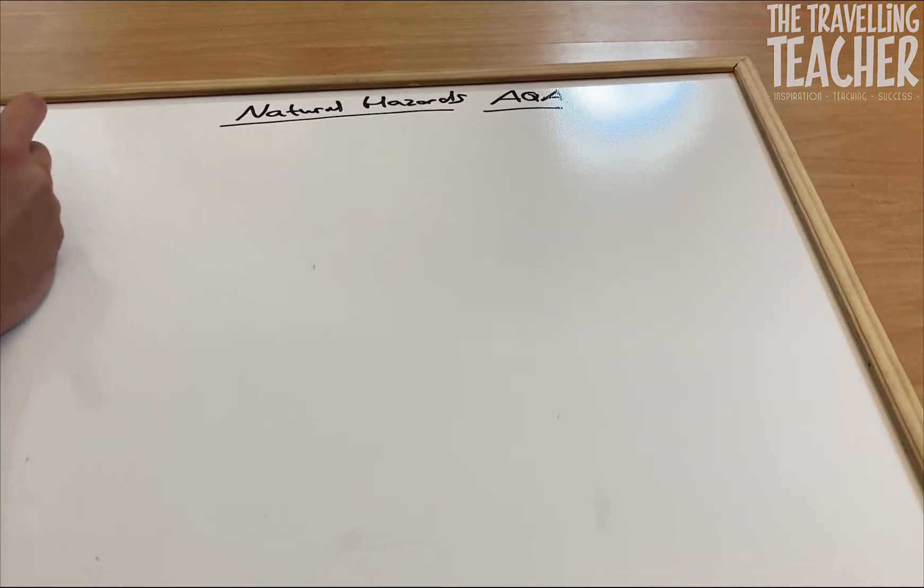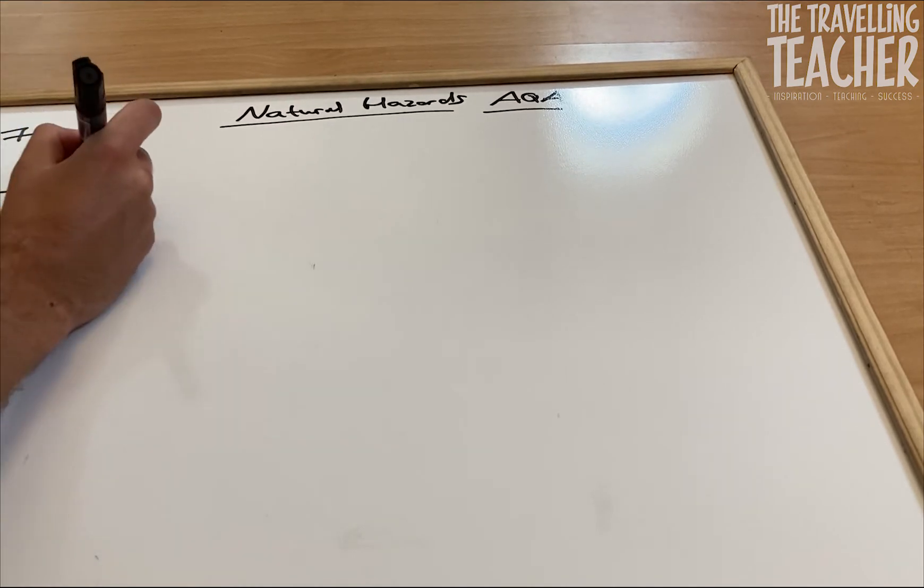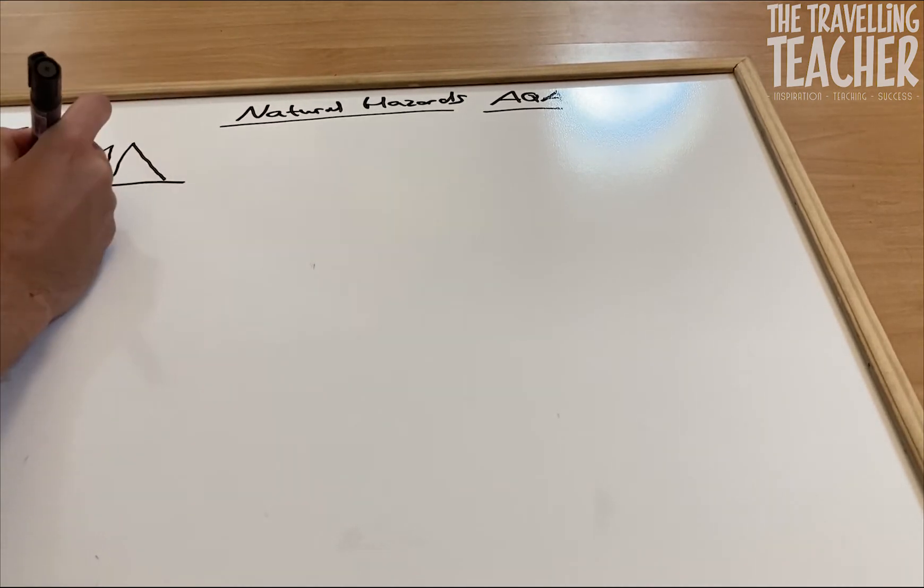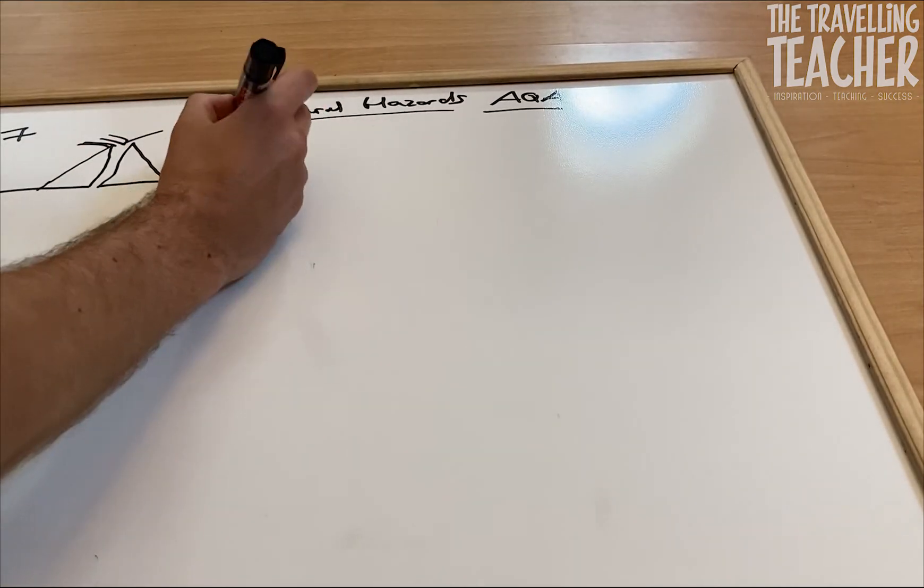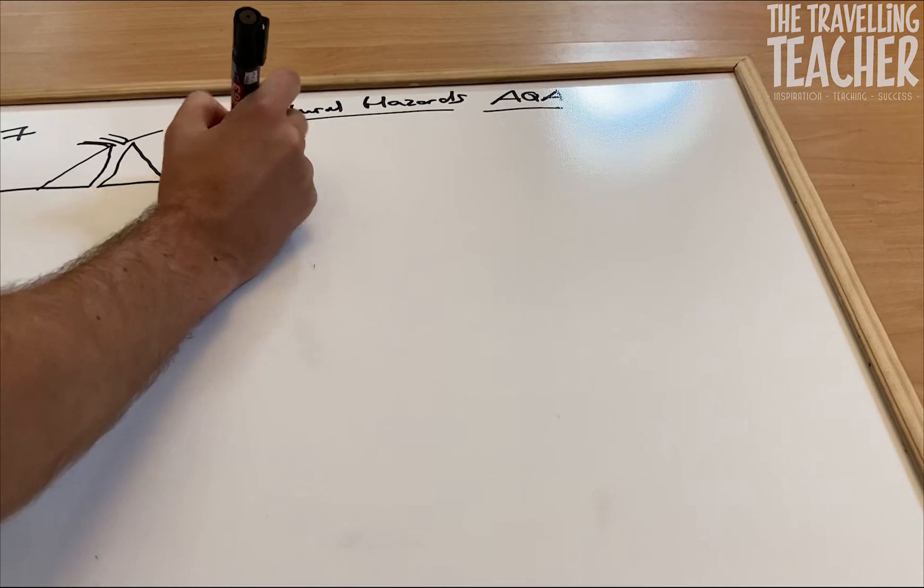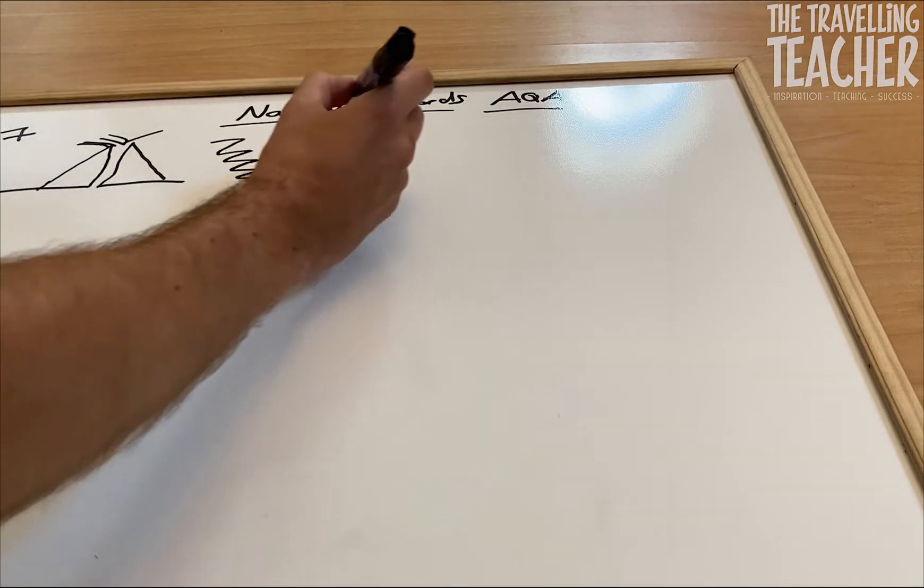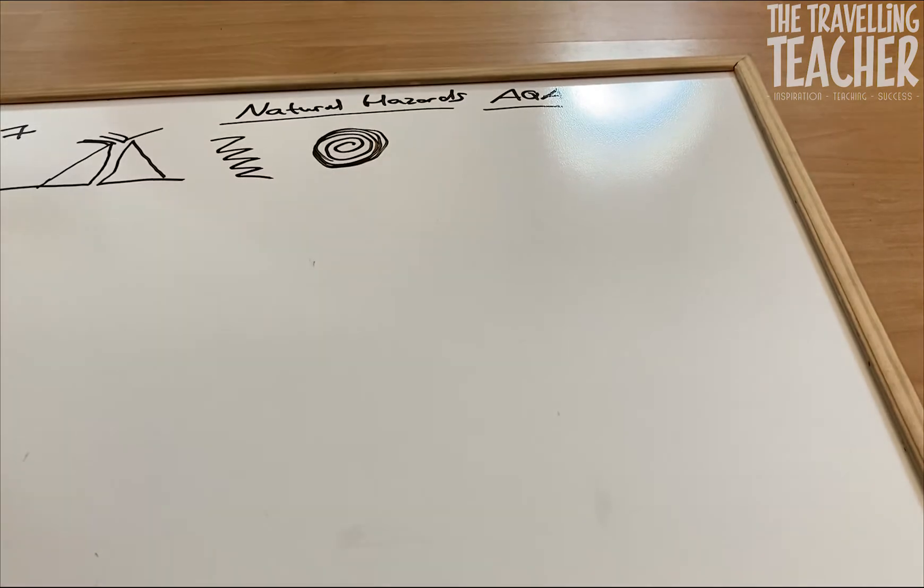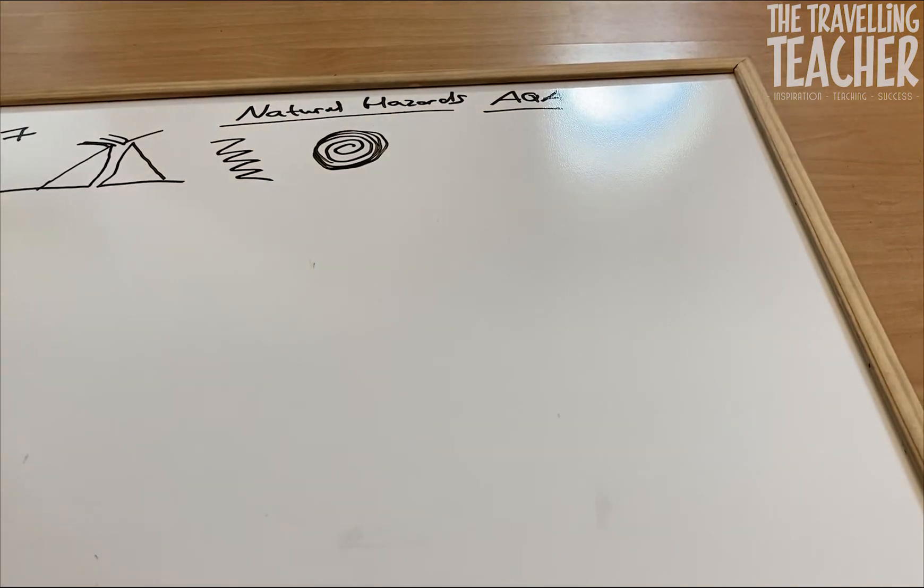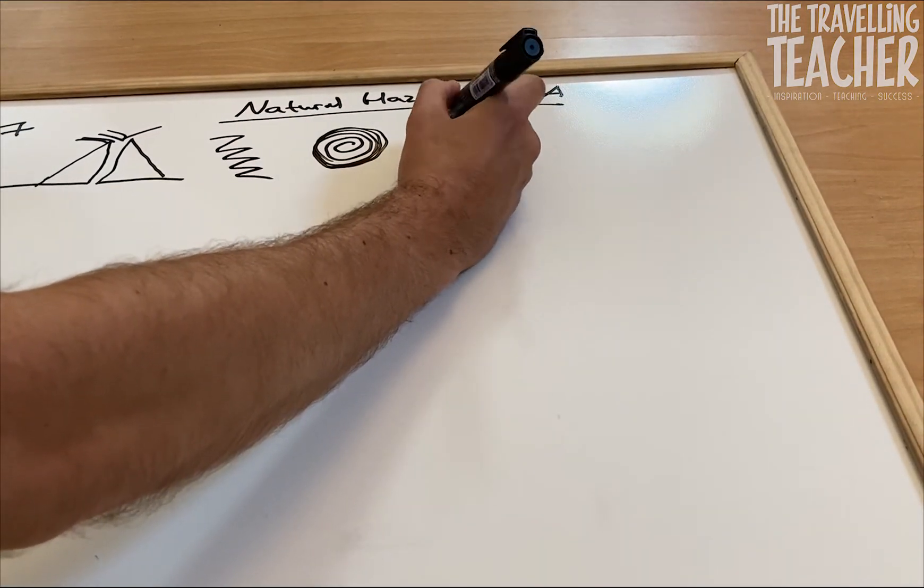These would be first one would be volcanic eruptions, there's my volcano cross-section of one, the second would be earthquakes, the third would be large storms such as hurricanes and cyclones.